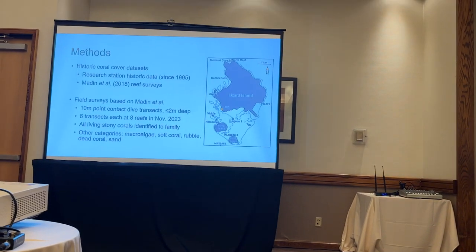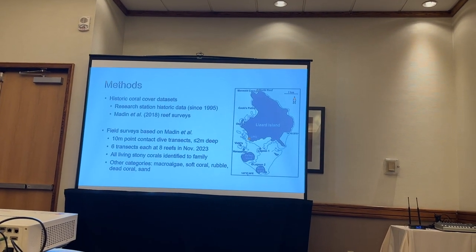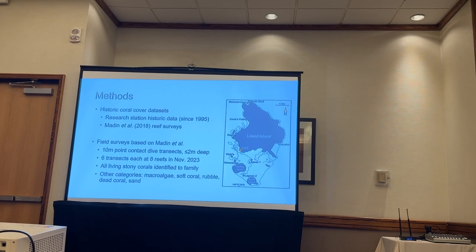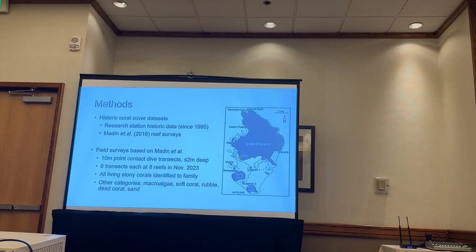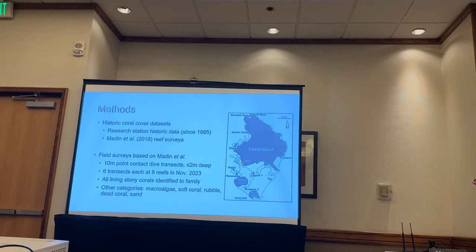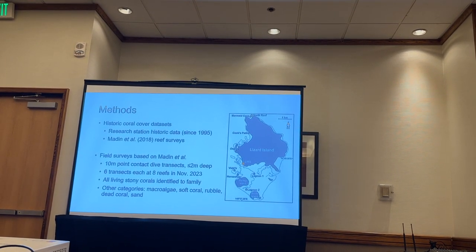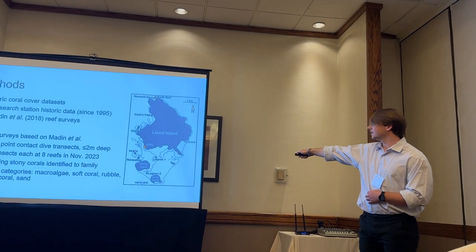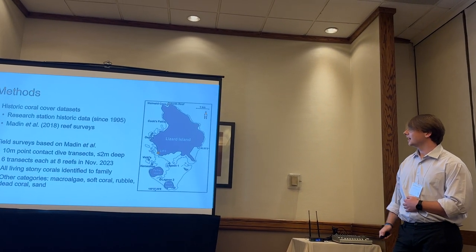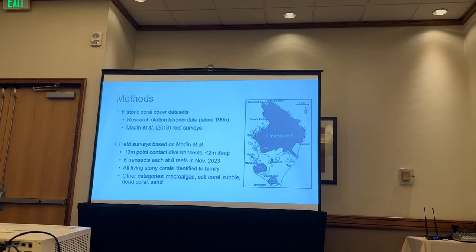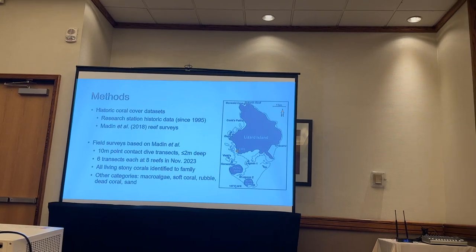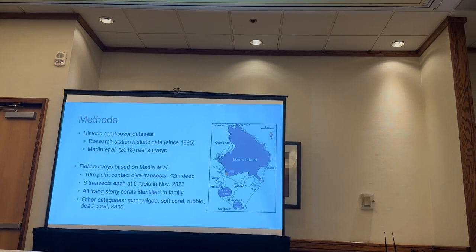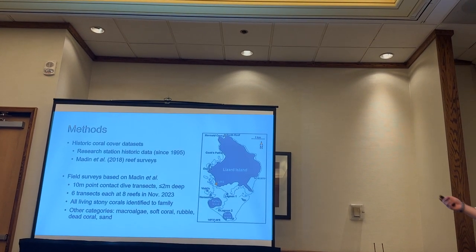For my methods, I adopted the same methods as past surveys done on the island so I could compare to historical data dating back to 1995. Madden et al. 2018 was the study done immediately after those disturbances, which allowed me to see a before-and-after picture. I did 10-meter point contact transects at least two meters depth, with six transects across eight reefs around the island. The black dot on the map indicates the research station, and each site uses the names commonly used on the island. I identified all living stony corals to family, along with substrate categories like macroalgae, crustose coralline algae, and sand.